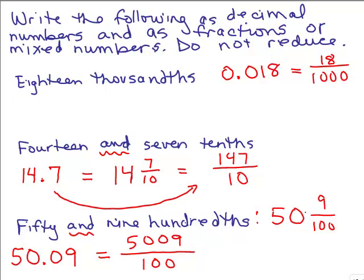Notice you would get the same thing if you would have taken this mixed number and done 100 times 50, which is 5,000 and add 9 to get 5,009 in the numerator. So we have learned how to write decimals as fractions or mixed numbers. We've learned how to take it from words to decimals, from decimals to words. So hopefully you've got a pretty good idea how to go back and forth between these formats.